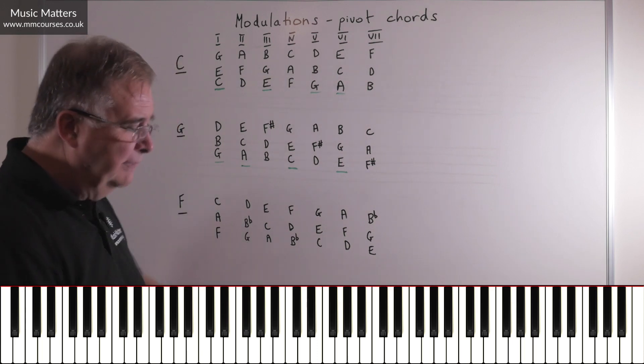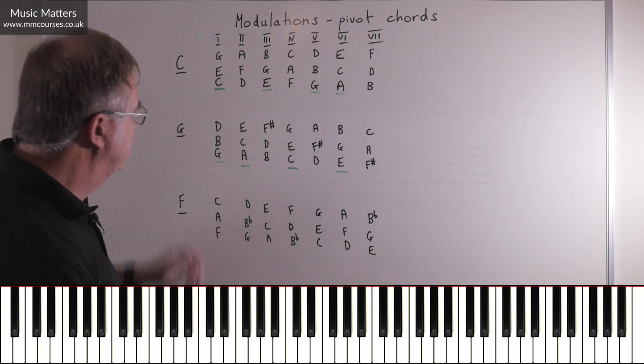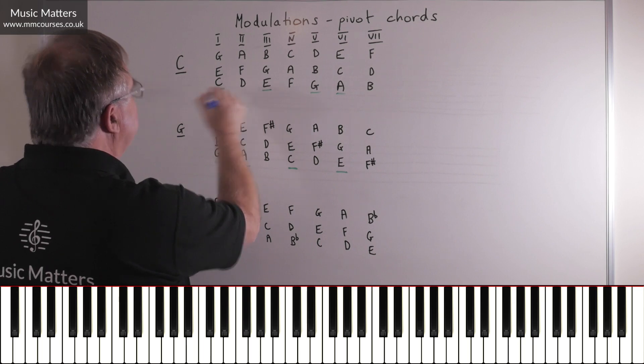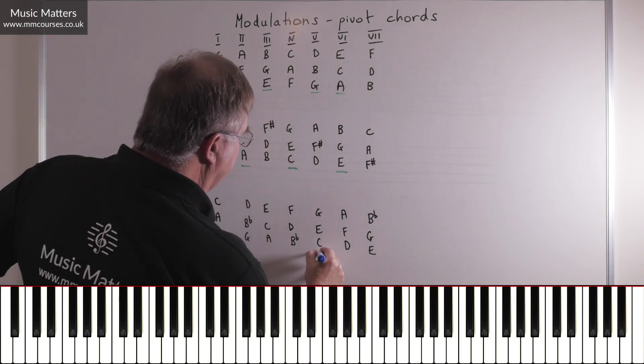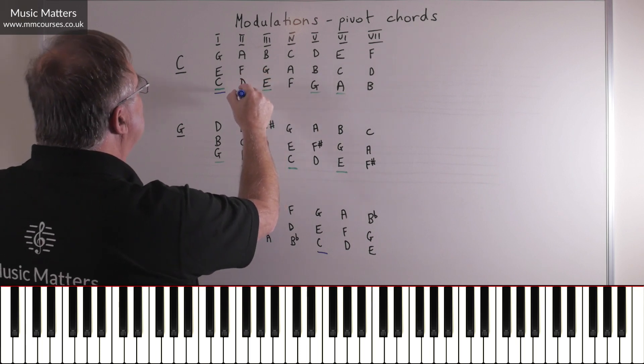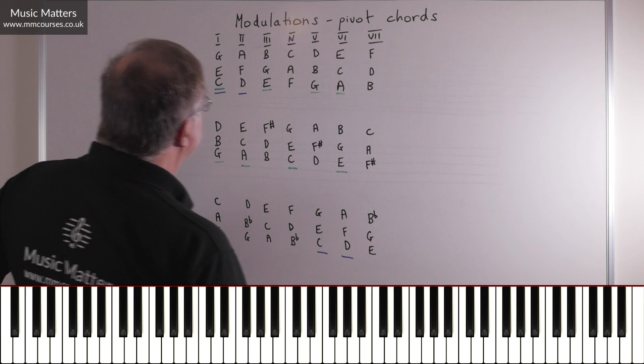And by the same token, if I wanted to go from C major to F major, I could do exactly the same thing. So you can see that now chord I in C major is chord V in F major. You can see that chord II in C major is chord VI in F.